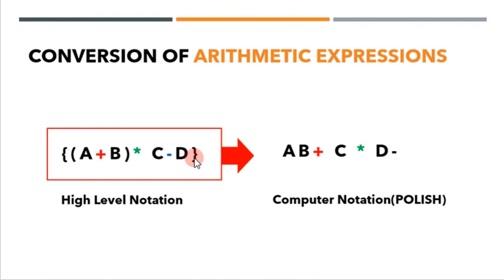A plus B is fine, C times D is also fine, but an expression like this which may contain n number of operators, n number of operands, and also include brackets, this kind of high-level notation has to be converted into a simpler form before a computer can proceed with the operations.